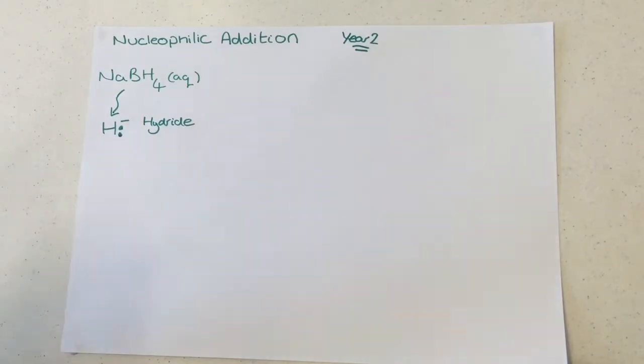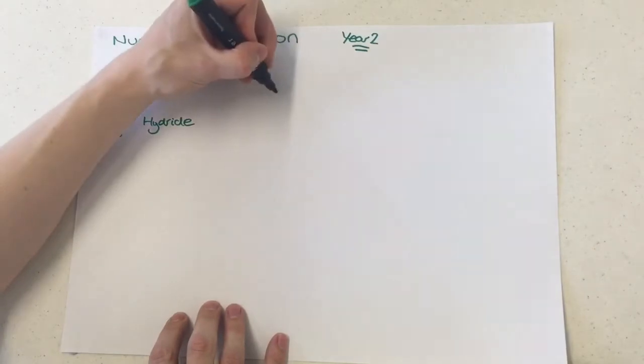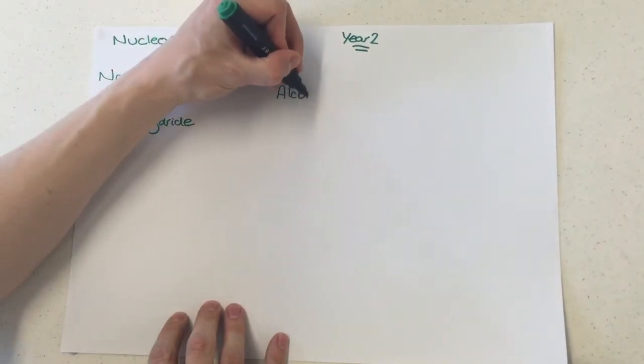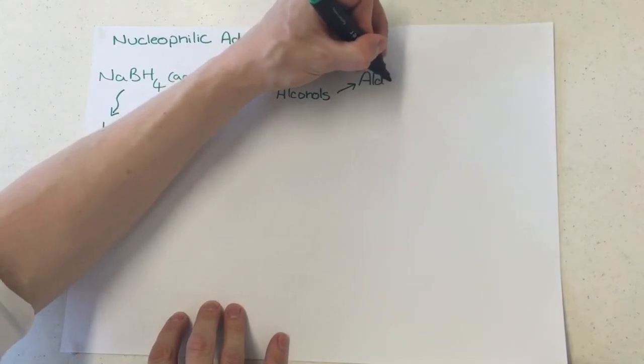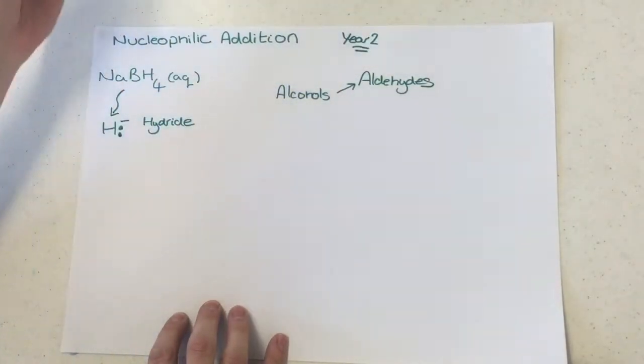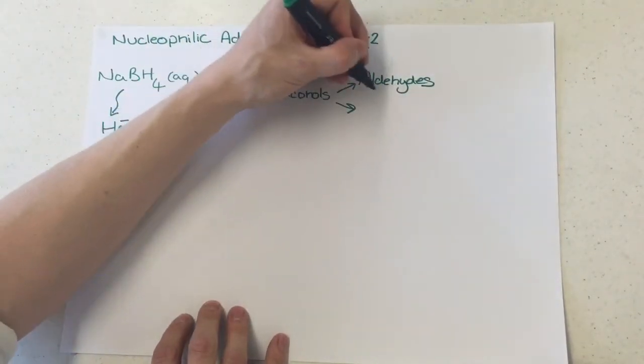Now, what's the main reason for doing this? Well, when you're in AS, you do alcohols undergoing oxidation reactions to form aldehydes, and you also form ketones.